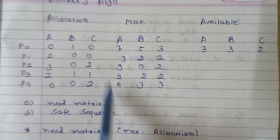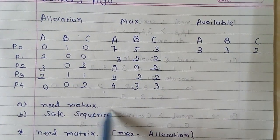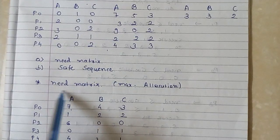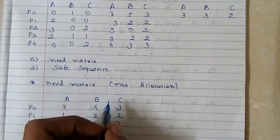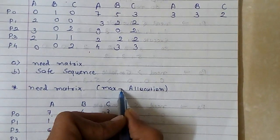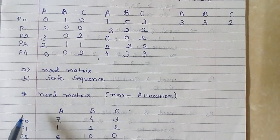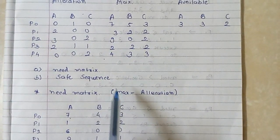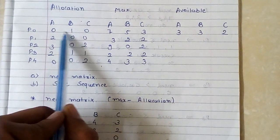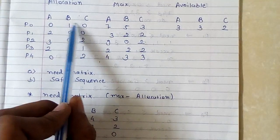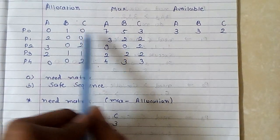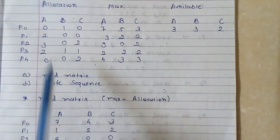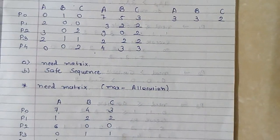To solve this problem, first you have to find the Need matrix. The equation is: Need = Maximum − Allocation. For P0: maximum is 7 5 3 and allocation is 0 1 0, so Need = 7 4 3. For the next process, 3 minus 2 equals 1, 2 minus 0 equals 2, 2 minus 0 equals 2. You find the Need matrix likewise for all processes.